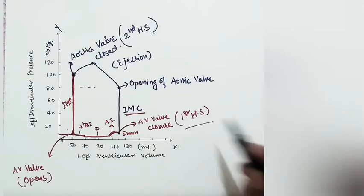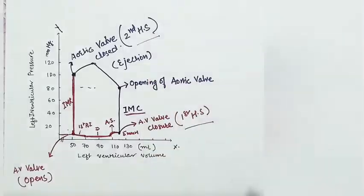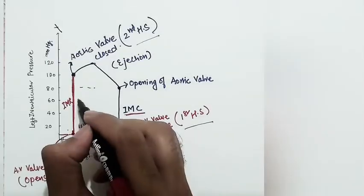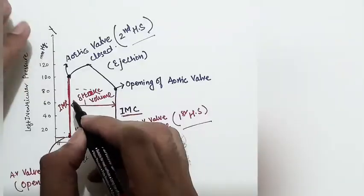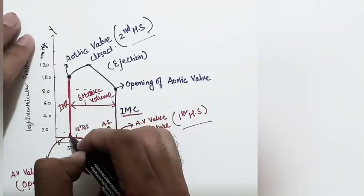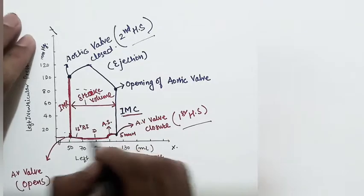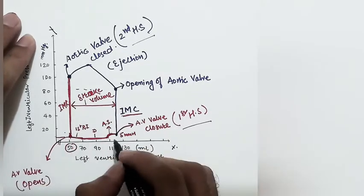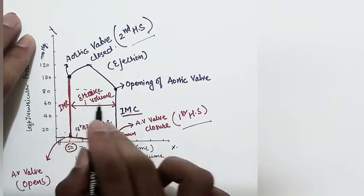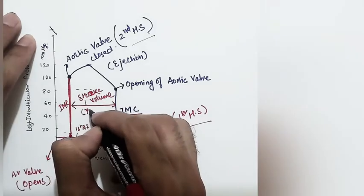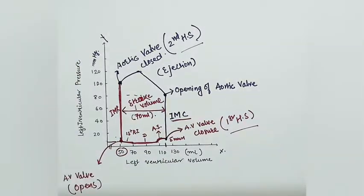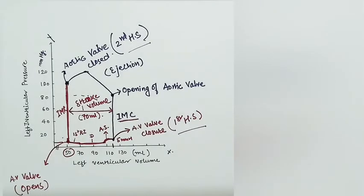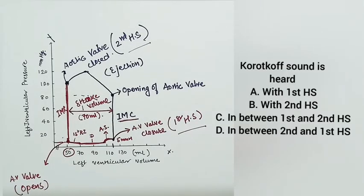The complete graph shows the first heart sound at AV valve closure and the second heart sound at aortic valve closure. The horizontal distance between 50 ml and 120 ml represents the stroke volume of 70 ml.